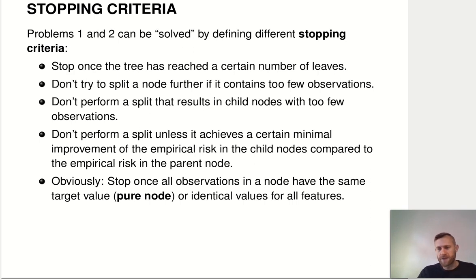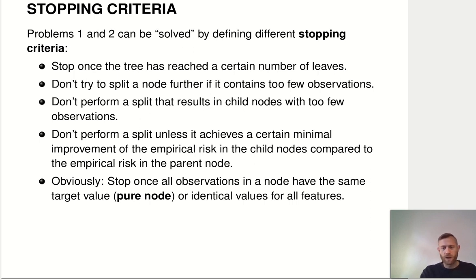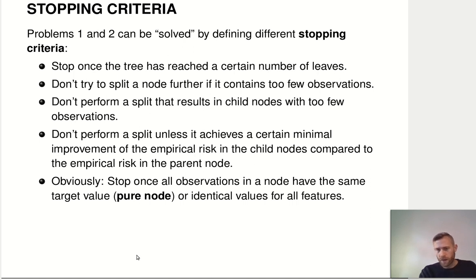The last stopping criterion is simply the nature of the method itself: if we are in a perfectly pure node where all the observations have the same target value or identical values for all features, then there's nothing more we can do there. All of these are hyperparameters of the method that are set to defaults in a concrete implementation, and you have to be aware of what these defaults are and think about whether they are appropriate for your application.